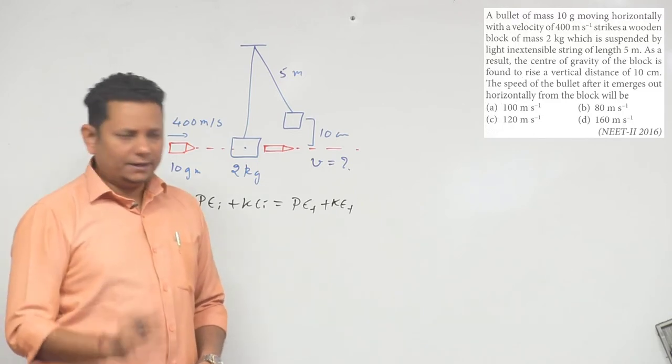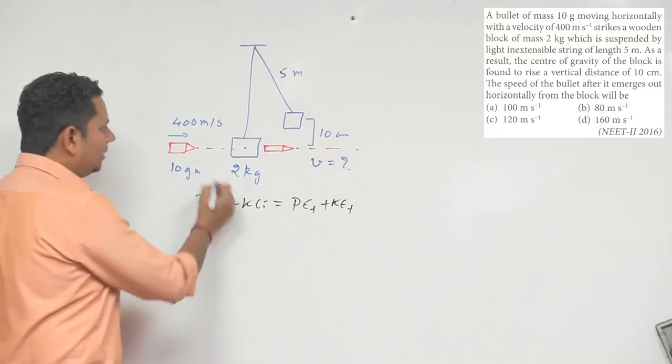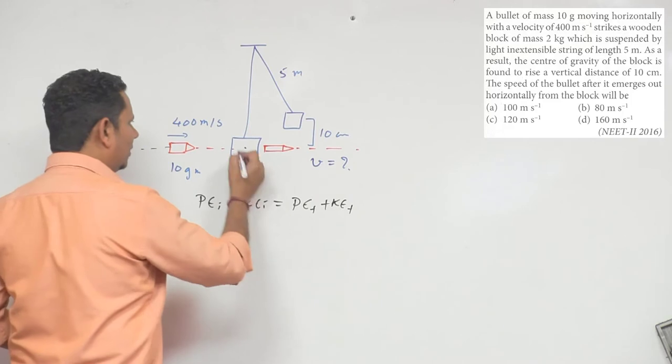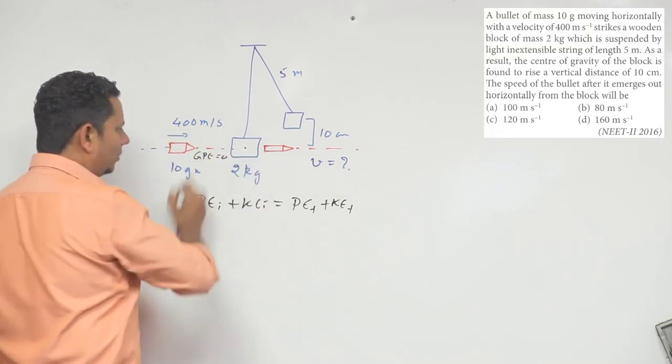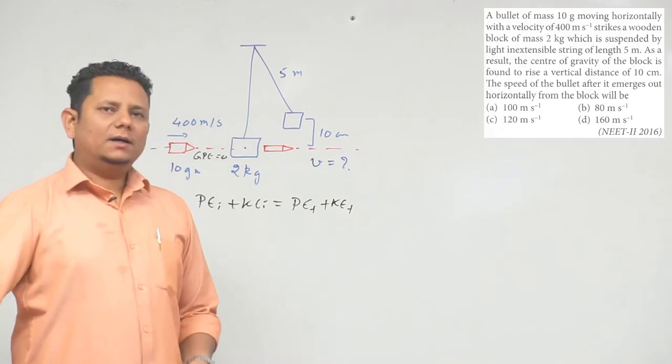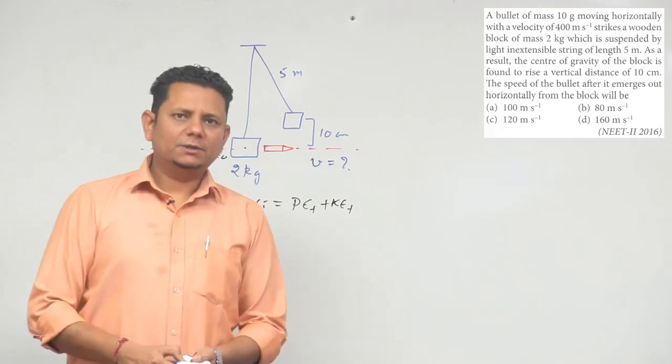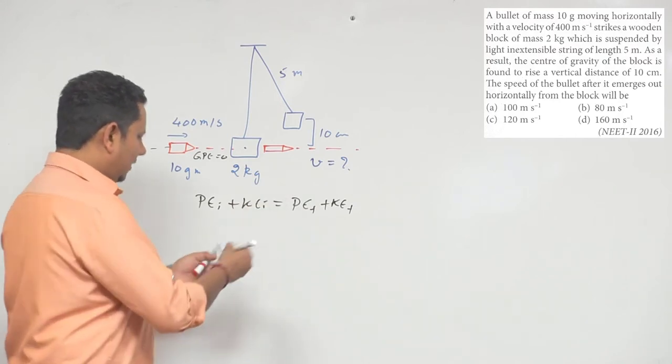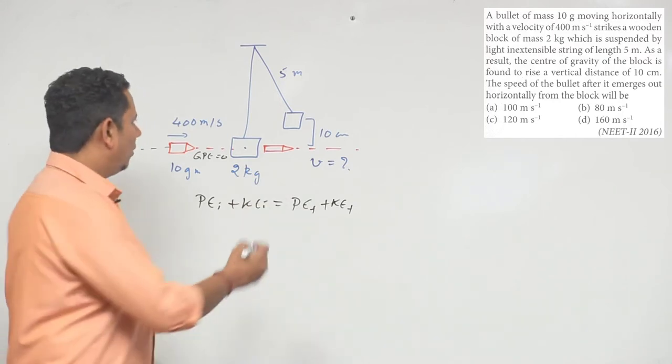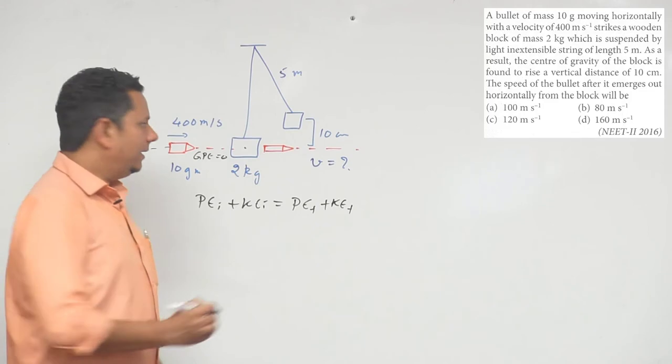energy, then your gravitational potential energy here is zero. To find the velocity, let's first consider this case: if the block rises 10 cm, there must be some velocity of the block at the bottom due to the bullet's impact